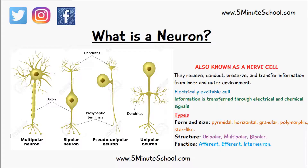Multipolar neurons are usually motor neurons and they have quite a few processes — one axon and several dendrites.